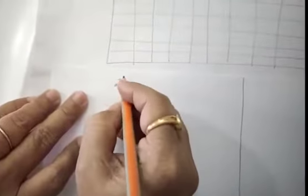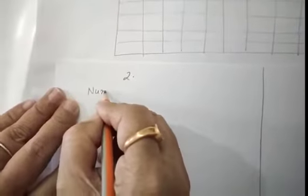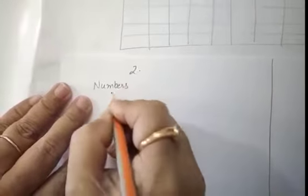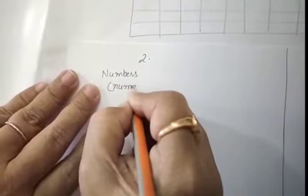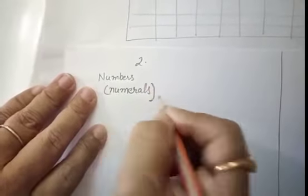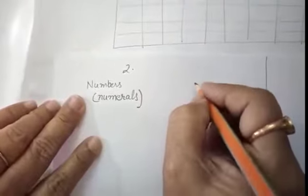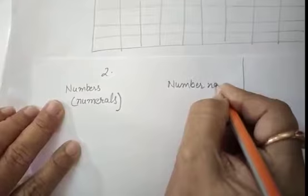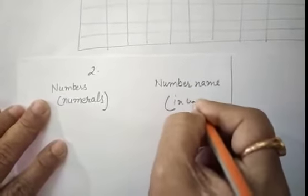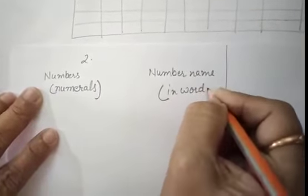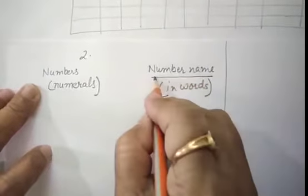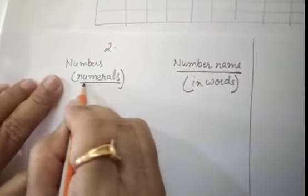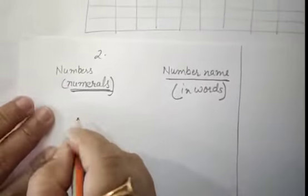We have learnt the numbers. We have made the charts 1 to 100. Now we have to know what the numbers in mathematics we say. Numbers are also called as numerals. These are called numerals and number names. Number names means writing in words. When we write the numbers in words, that time we say that it is a number name and numbers are also called as numerals.